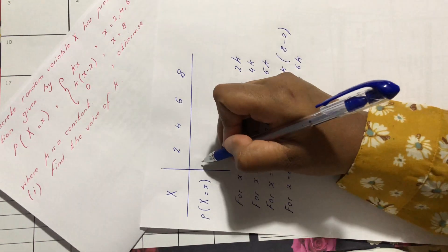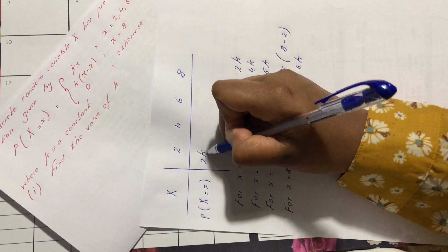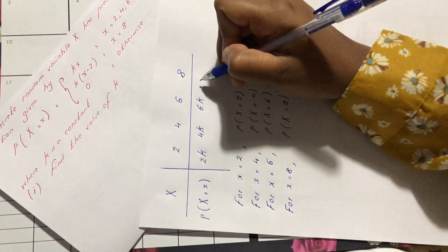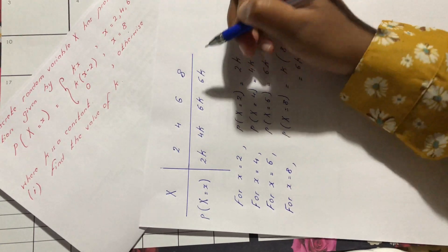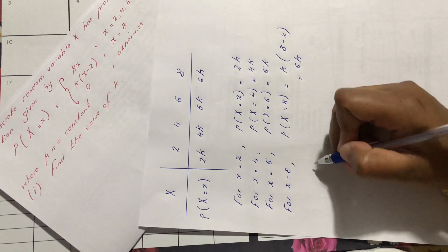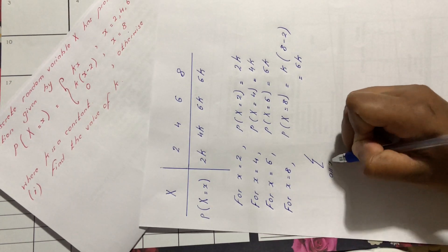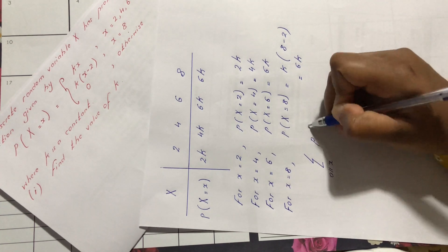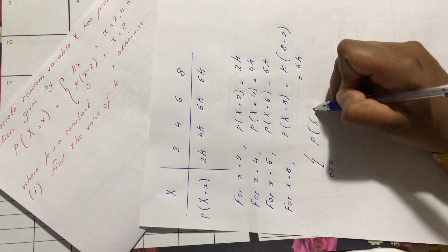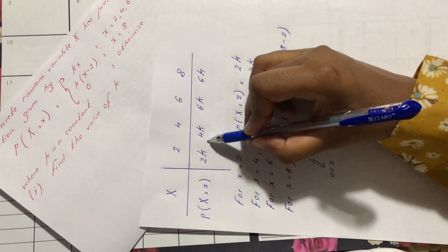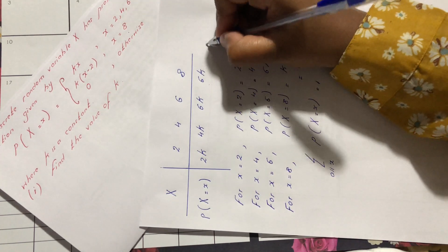We fill in the table in terms of k: 2k, 4k, 6k, and again 6k. Now we know that summation of all x, probability of x is equal to 1, which means that if we add all these probabilities, we should get 1.